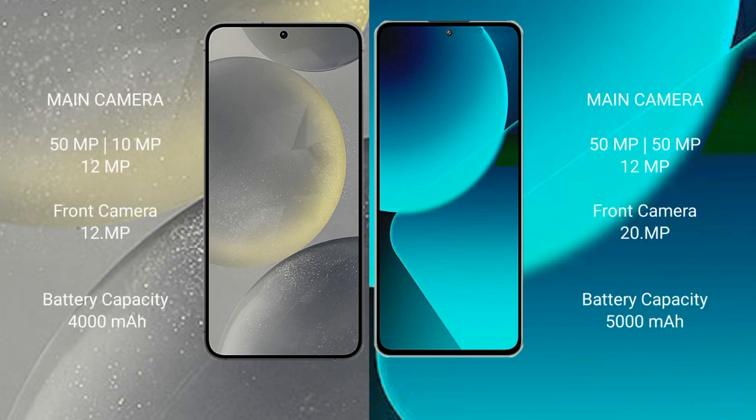Samsung Galaxy S24 features a triple rear camera setup: 50MP plus 10MP plus 12MP, and a front camera of 12MP. Xiaomi 13T features a triple rear camera setup: 50MP plus 15MP, and a front camera of 12MP.